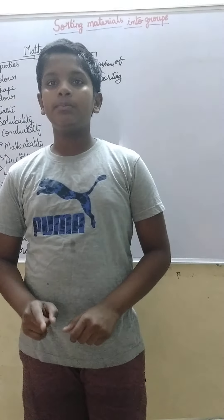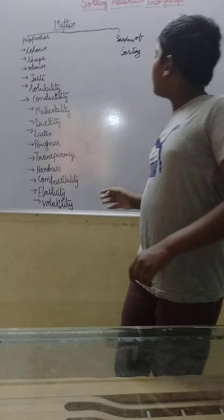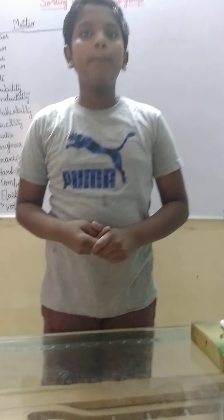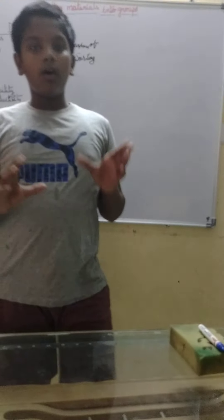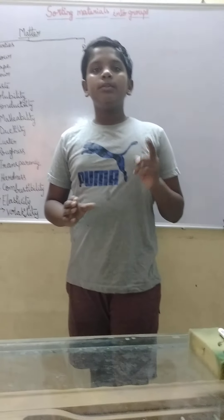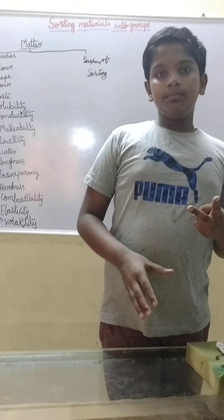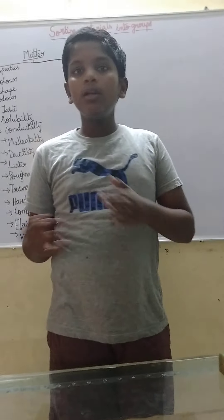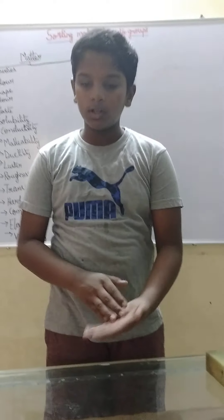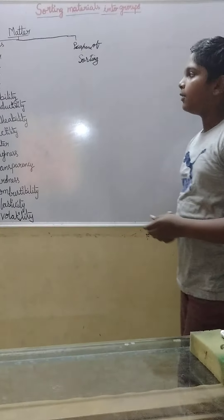You may also hear the words miscible and immiscible liquids. These are not the same as solubility. Solubility refers to solids dissolving in water, but miscible and immiscible refer to liquids. Miscible liquids mix with water; immiscible liquids do not. Take the example of oil — it is immiscible. It doesn't mix with water; it stays on top as a separate layer.